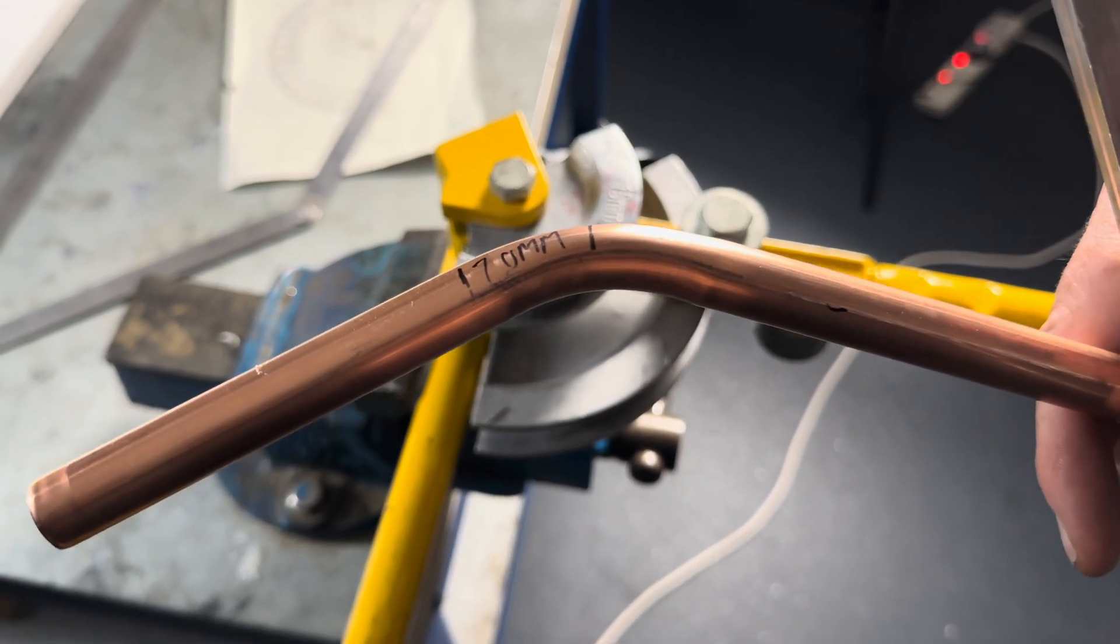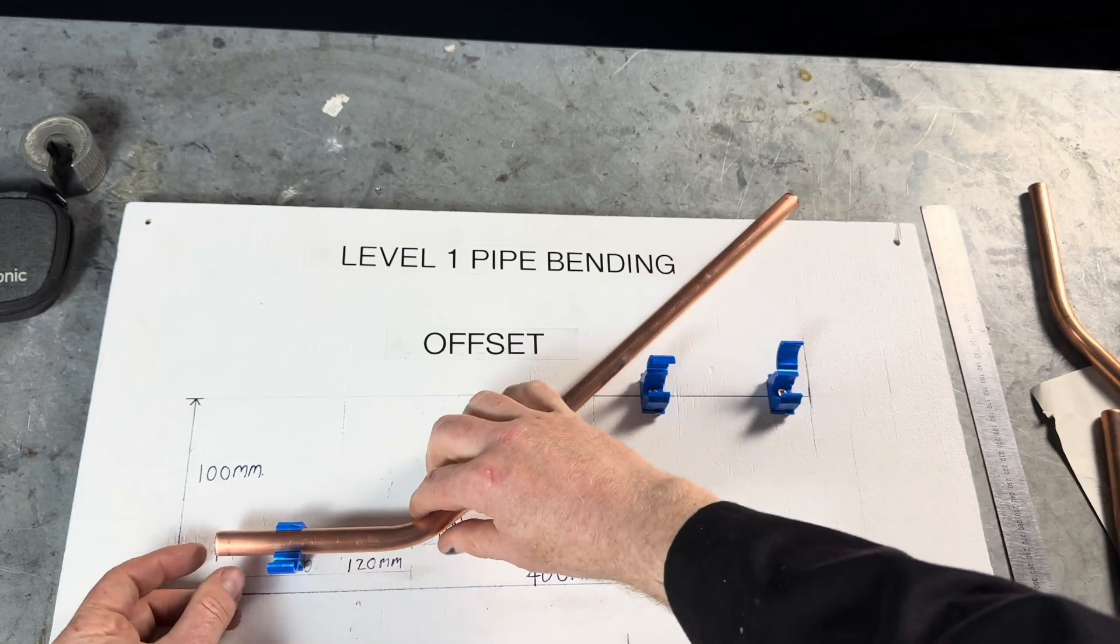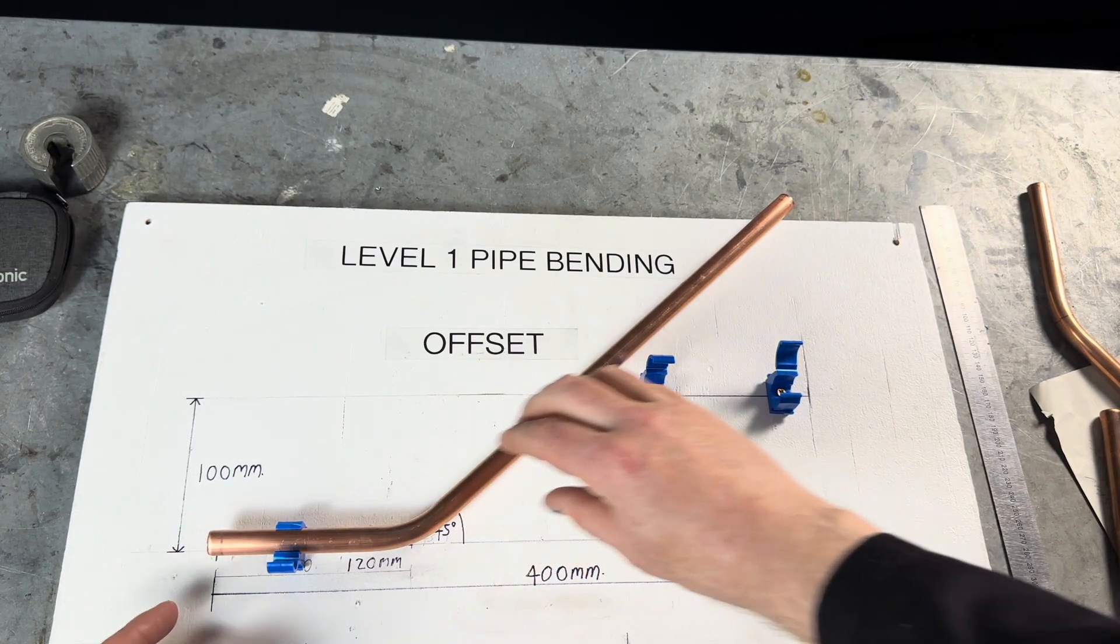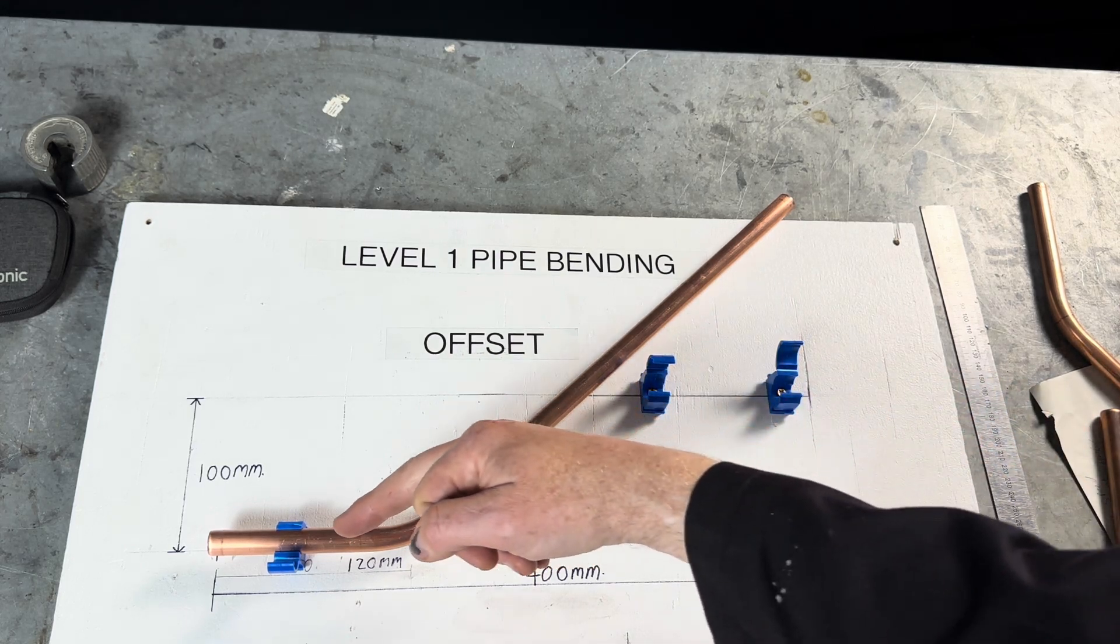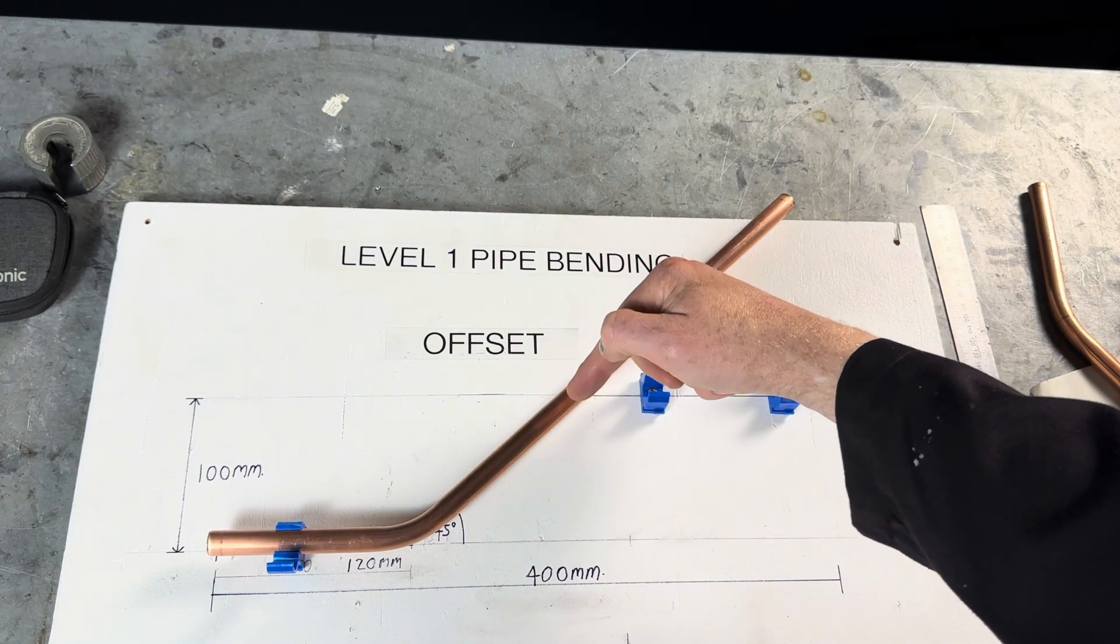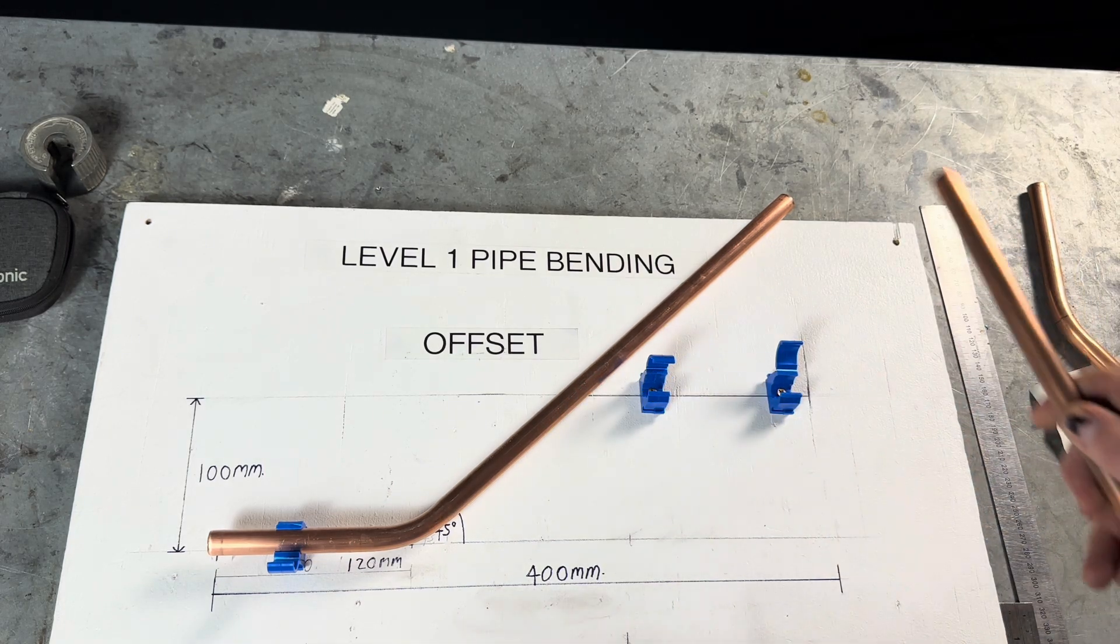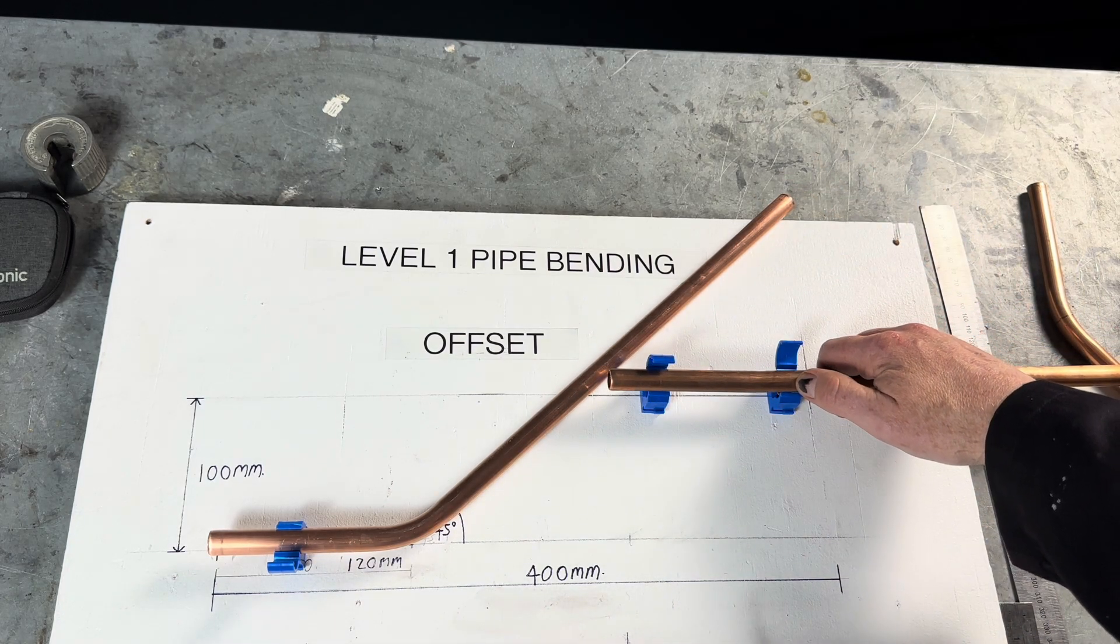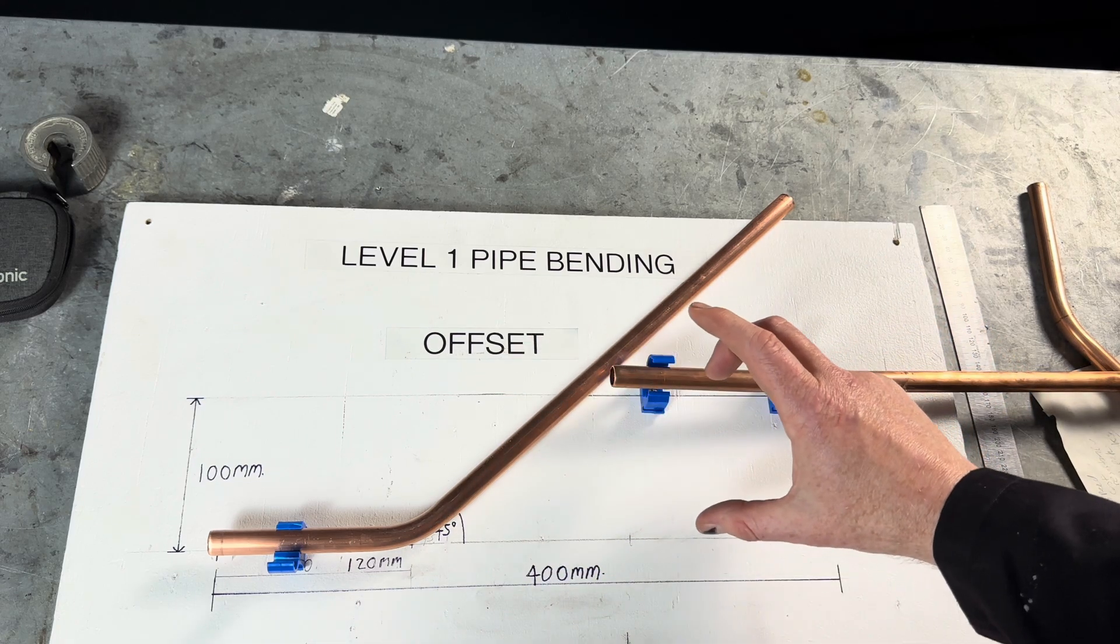You can see the centre of the bend line. Right, so let's have a look. That's what we've done so far. So now, because we bent this 45, we need to bend this back 45, but we need to measure it. So this bit here, from middle to middle, is 100 mm.